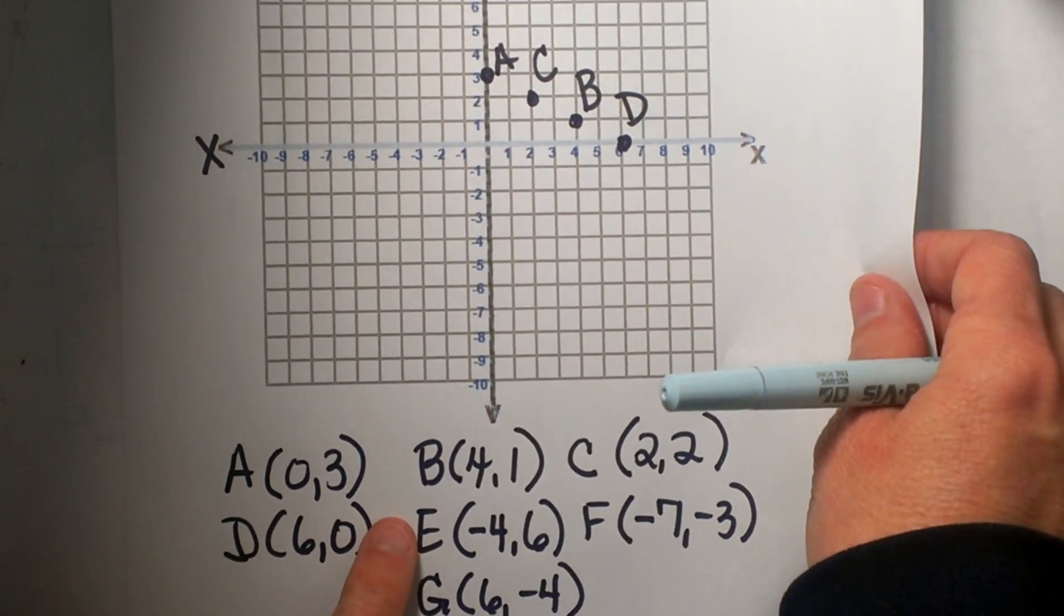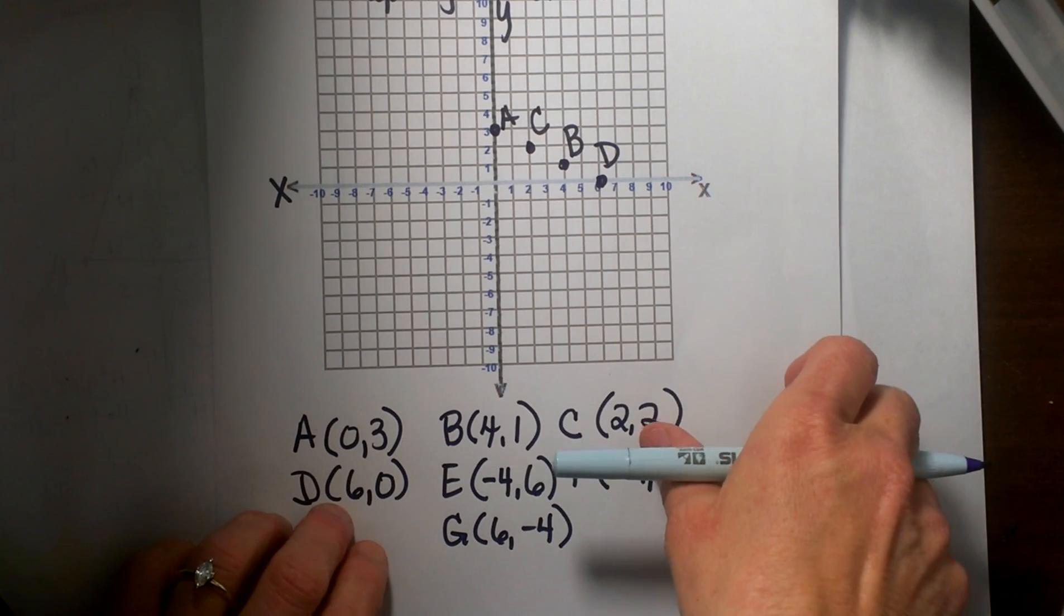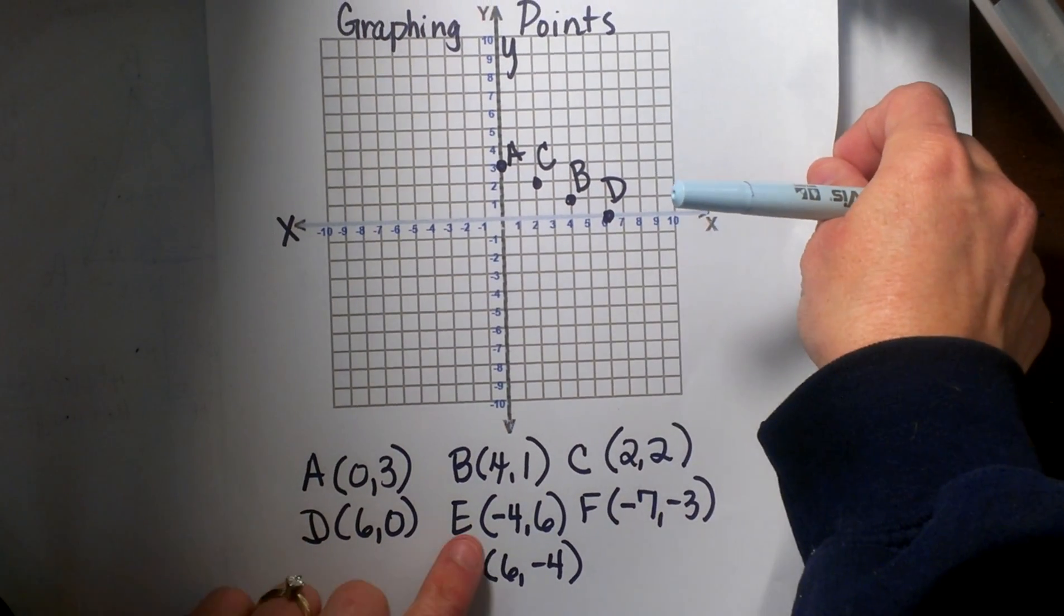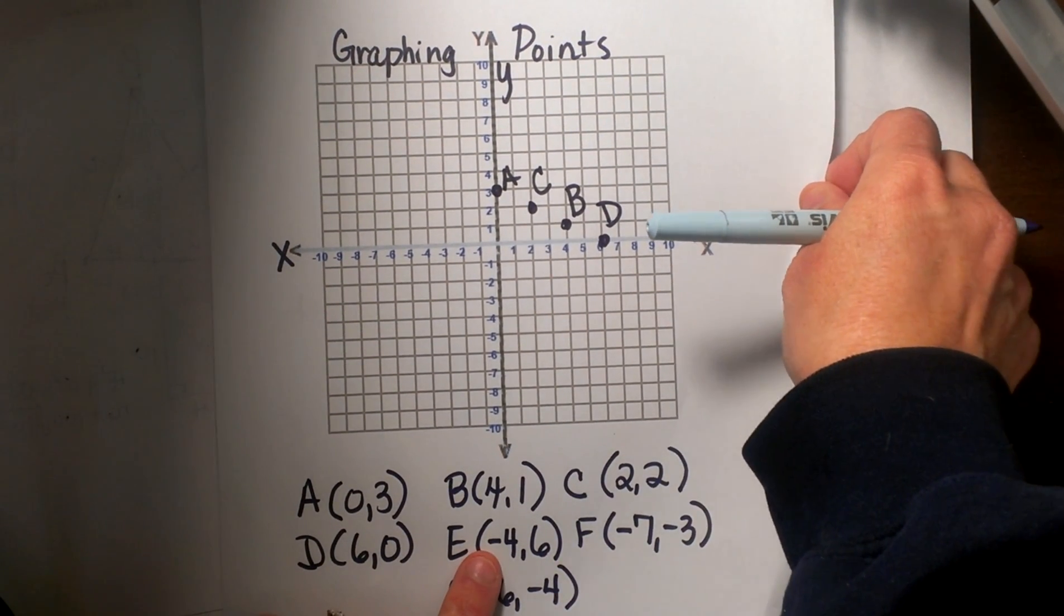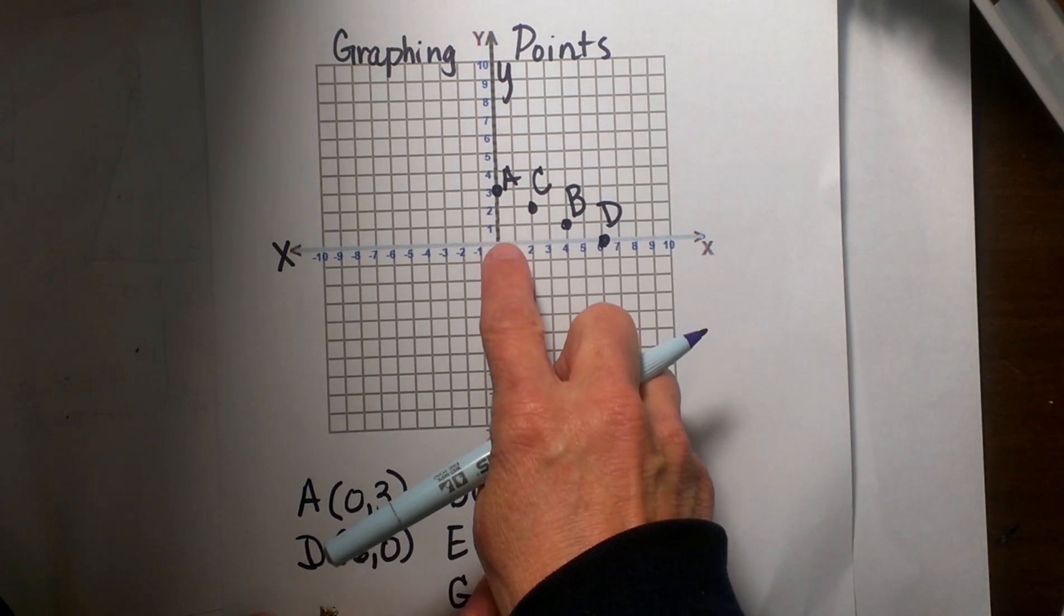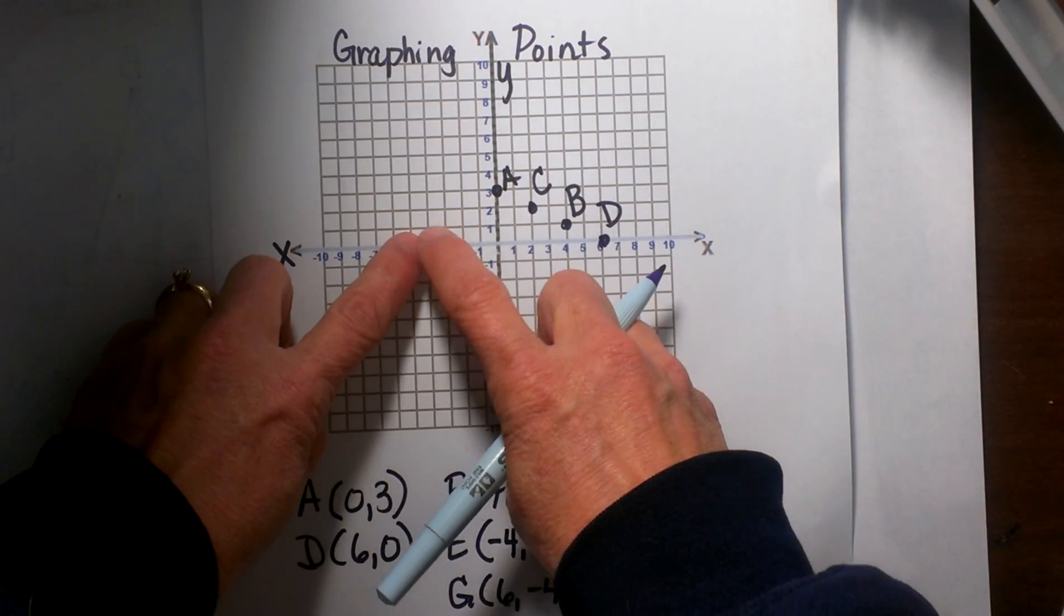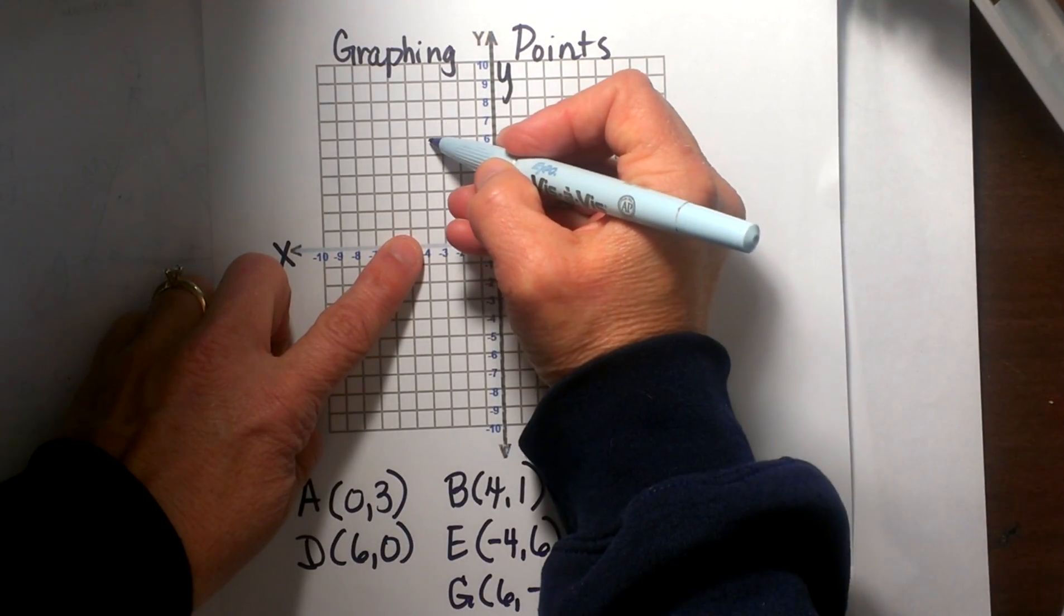Now let's look at some that actually have some different signed ordered pairs. Let's look at E. E has the signed number negative 4, positive 6. So from the origin I am going to go the negative direction this time, so negative 4, and then positive 6 that means I go up 6, so here is my point.